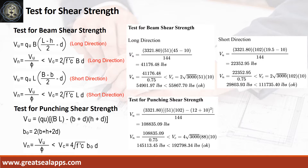The maximum beam shear force at long direction is 41,176.48 pounds. The nominal force is 54,901.97 pounds, less than 55,867.7 pounds. The maximum beam shear force at short direction is 22,352.95 pounds. The nominal force is 29,803.93 pounds, less than 111,735.4 pounds. The maximum punching shear force is 108,835.09 pounds. The nominal force is 145,113.45 pounds, less than 192,798.34 pounds.